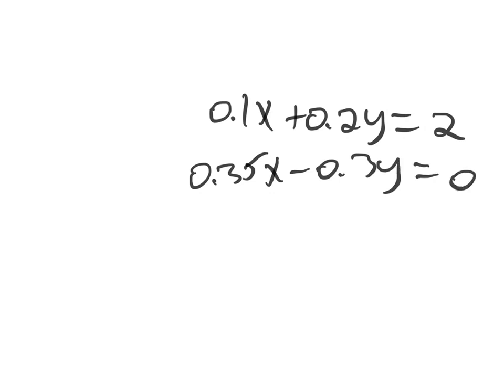So we could multiply everything by 100 to get rid of the decimals, and then we could do substitution. Or we could add them and use elimination.